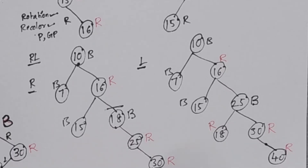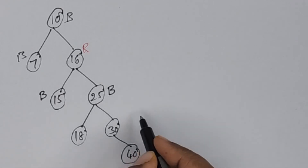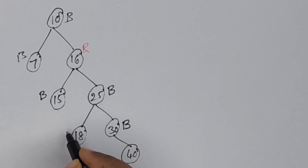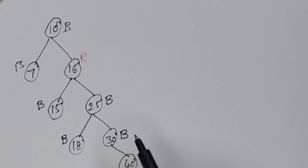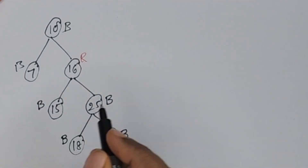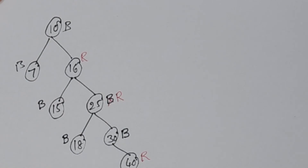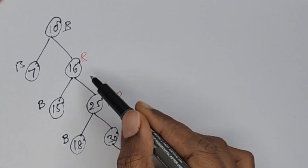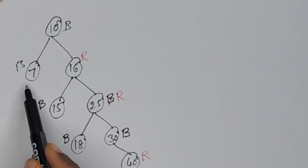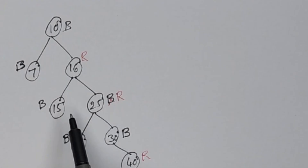Recolor: parent 30 is red — make it black. Sibling 18 is red — make it black. Node 40 remains red. Next, recolor grandparent 25: since it is not the root, make it red. Recheck: parent of 25 is red again — red-red conflict. Check the sibling of 25: sibling color is black. So we must perform rotation.